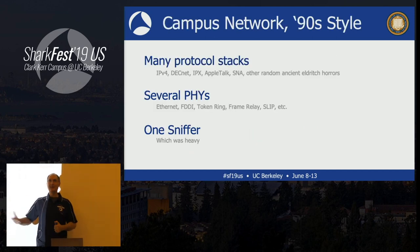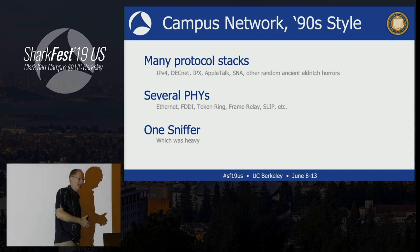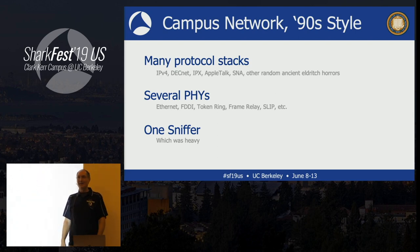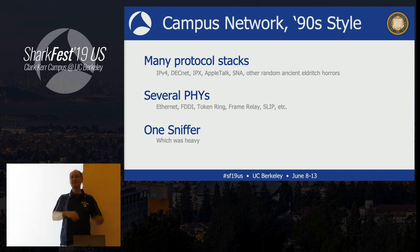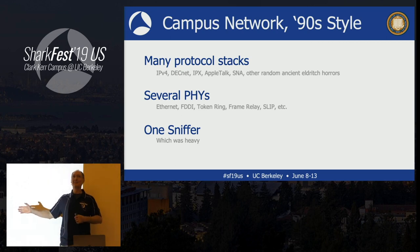Along with being a Unix administrator, part of the job was to help take care of the campus network. We had a pretty standard university network at the time — IPv4, DECnet, IPX, token ring, Ethernet, frame relay, SLIP. We had one and exactly one sniffer, and whenever there was a problem on the network, my boss would say, 'Go get the sniffer and figure out what's going on.' My first task was to go find the sniffer since it was a scarce commodity — somebody was always using it. I'd plug it in and look at it; I had no clue what I was doing, but that was my first exposure to protocol analysis.